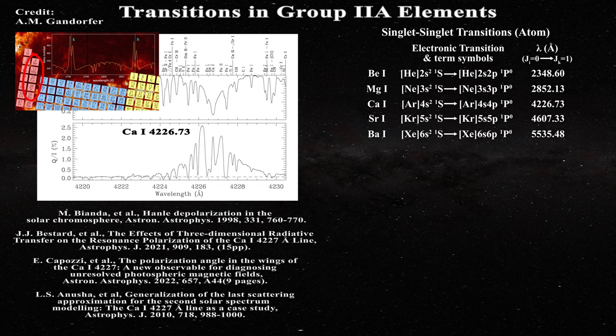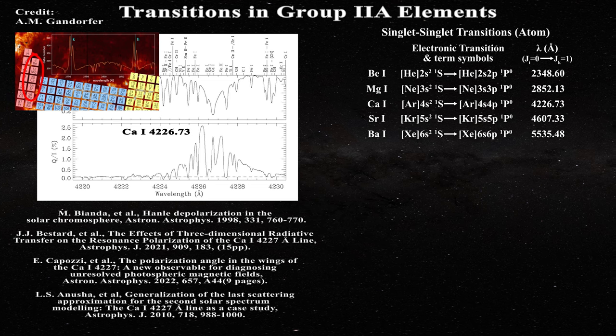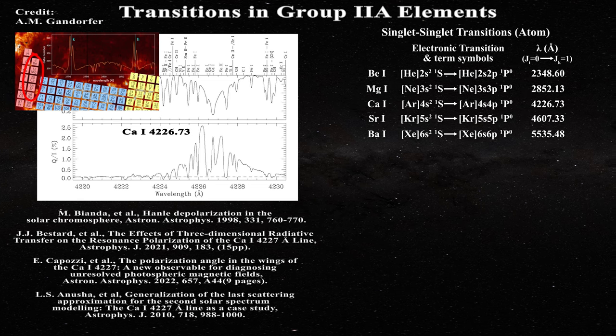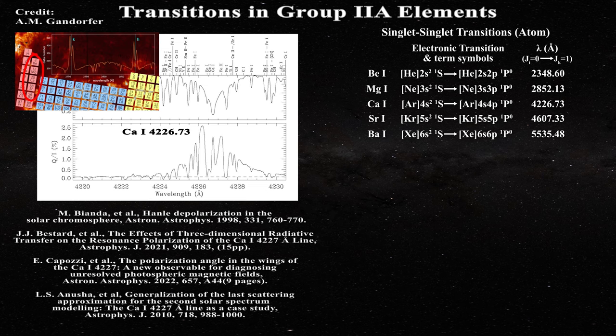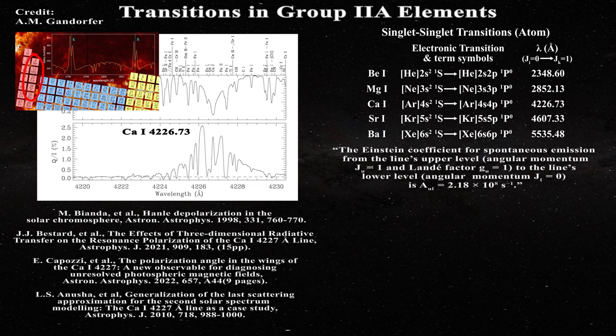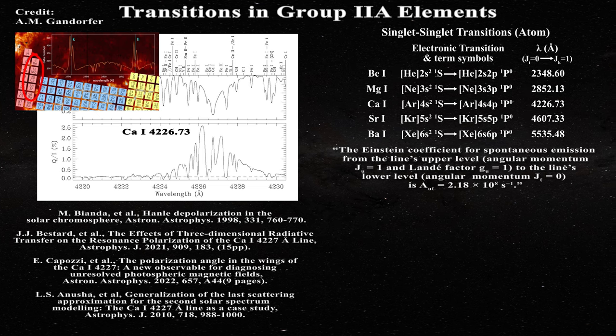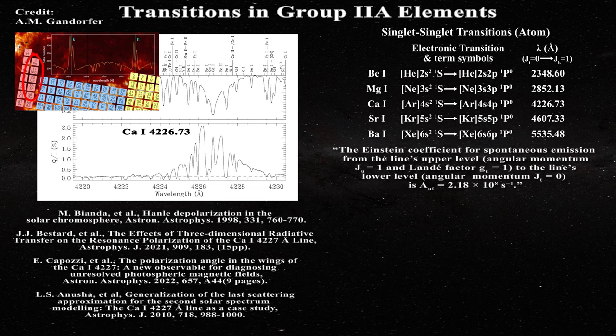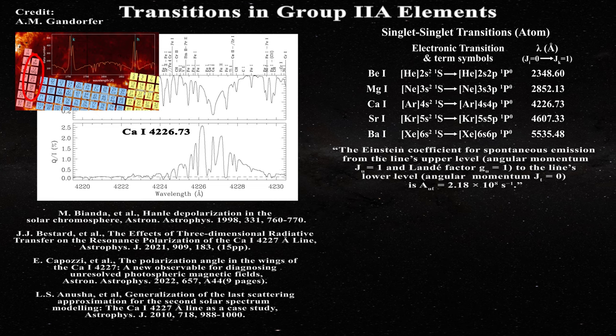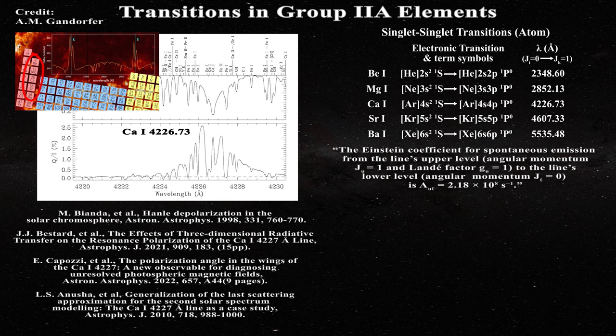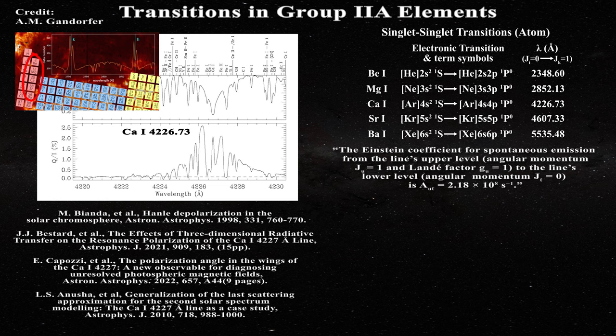At the time, it was noted that such methods are invalid because field measurements rest on known Einstein coefficients. The paper by Bestart et al. discusses the Hanley effect and the use of Einstein coefficients for spontaneous emission. The authors adopt a two-level atom approximation concentrating only on the upper energy level U and the lower energy level L involved in the transition. They write: The Einstein coefficient for spontaneous emission from the line's upper level angular momentum J sub U equals 1 and lambda factor G sub U equals 1 to the line's lower level angular momentum J sub L equals 0 is AUL equal 2.18 times 10 to the eighth per second.